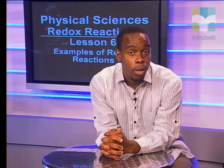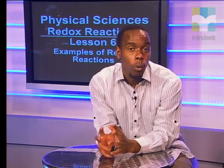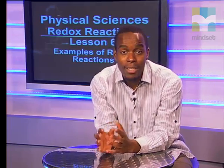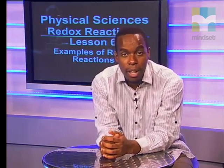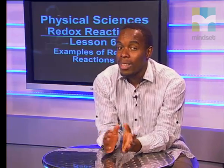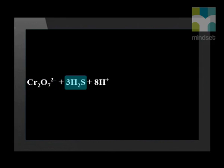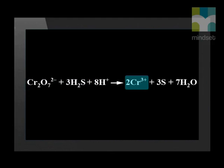Let's discuss the theory behind this reaction. When we add hydrogen sulfide to acidified potassium dichromate, we observe a color change. Let's look at the net ionic reaction and see if we can work out what has happened. The net ionic reaction without spectator ions is: dichromate plus three hydrogen sulfide plus eight hydrogen ions goes to two chromium 3+ ions plus three sulfur atoms plus seven water molecules.